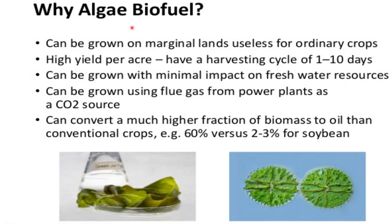Why are we using algae as a biofuel? Because algae can grow on marine land that is useless for ordinary crops, and can yield a higher yield per acre. They have a harvesting cycle of about 1 to 10 days, whereas other plants used for biofuel take a minimum of 6 months to 1 year to complete a harvesting cycle. Compared to that, microalgae are far better than other plants.